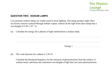This is question 2 from Atoms, Photons and Nuclei Level 3 Physics, a 2012 paper. Sodium lamps. Low-pressure sodium lamps are used widely in street lighting. The lamps produce light when an electric current is passed through sodium vapour. Almost all the light from these lamps has a wavelength of 5.89 times 10 to the minus 7 metres, that's 589 nanometres.